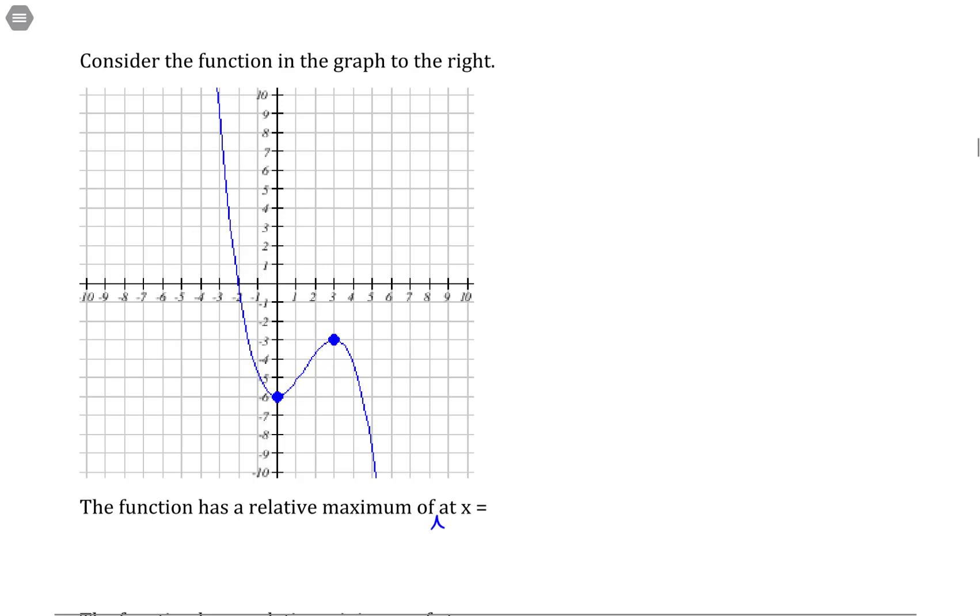So relative maximum. A relative maximum is a maximum value in the curve over a small neighborhood. Not necessarily the largest value overall, but it's sort of like where a peak occurs. So this particular point right here, we know that this is a relative maximum because over a small range of values, it's the largest overall.